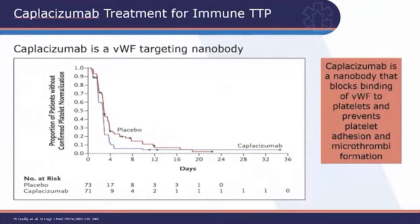One drug coming to Canada shortly, already used in the US and Europe, is caplacizumab — a drug that prevents binding of von Willebrand factor to platelets and thus prevents microthrombi from forming in the first place, protecting the patient while you're getting them treatment for TTP. This is something you may see in the future.